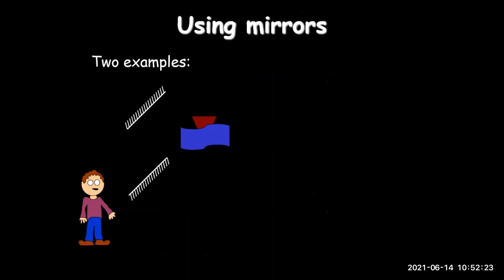One example using mirrors is a periscope. In a periscope, two mirrors are placed at 45 degrees inside a box. Light coming from the surface reflects off the first mirror, then the second, allowing us to see objects above the surface. Submarines use periscopes to see above the water level. The mirror surface is smooth and shiny, giving regular reflection.